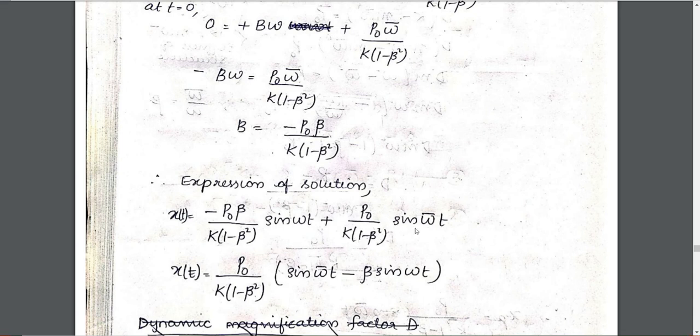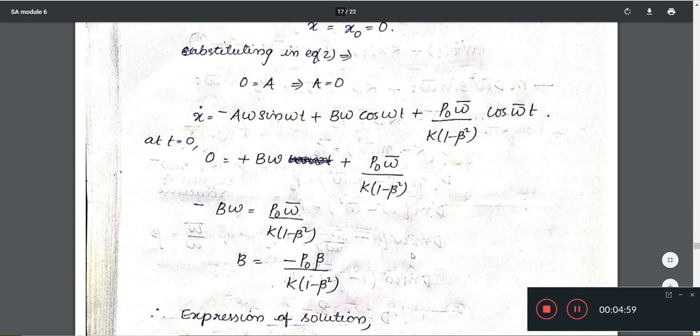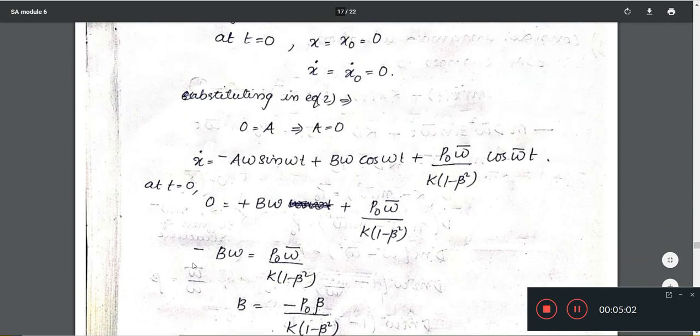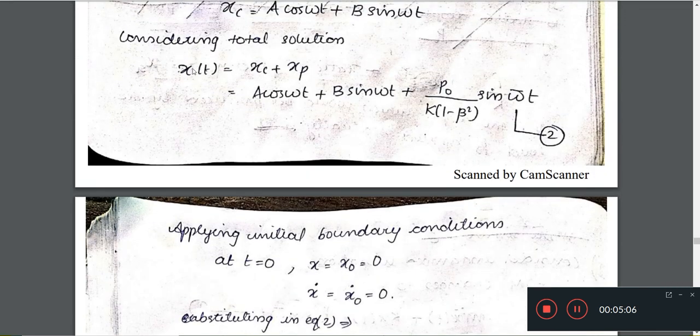Substituting the initial conditions, we get x multiplied by k times (1 minus beta_squared) times sin(omega_bar * t). Setting x(0) equals 0: the sin(0) term vanishes, so a * cos(omega * 0) equals 0, giving a equals 0. With a equal to 0, that term drops out.